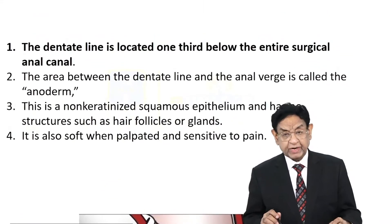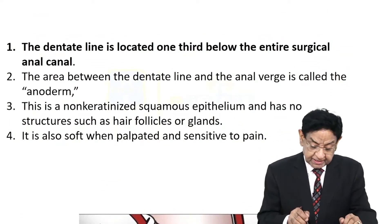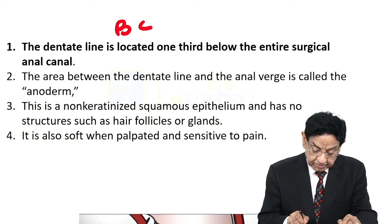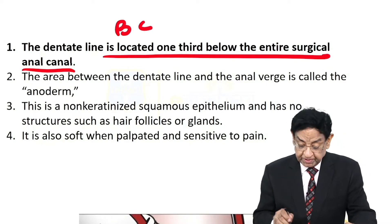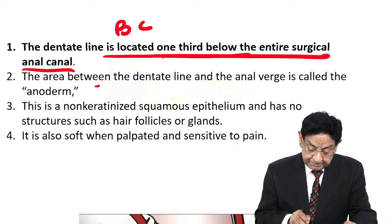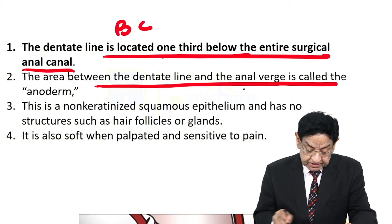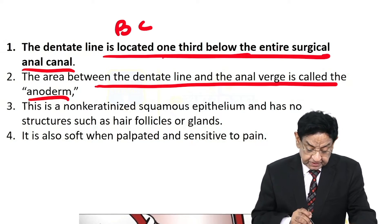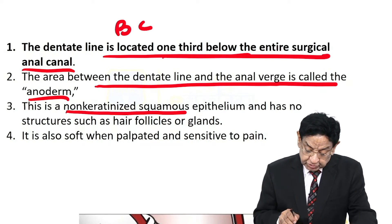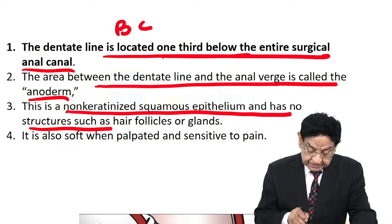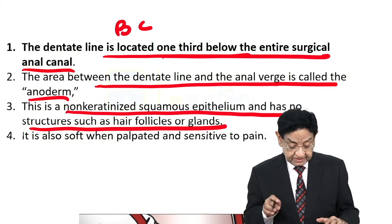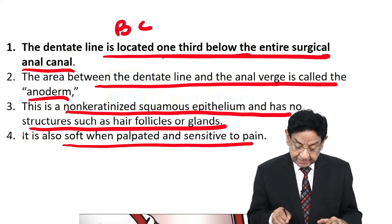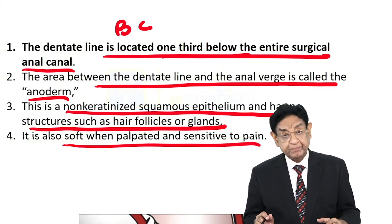The dentate line is located one-third below the entire surgical anal canal. The area between the dentate line and the anal verge is called the anoderm. This is non-keratinized squamous epithelium with no structures such as hair follicles or glands.